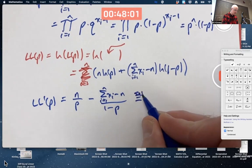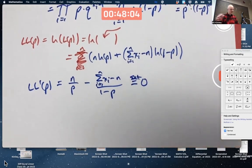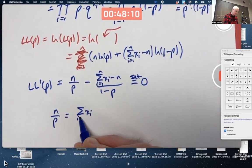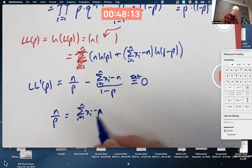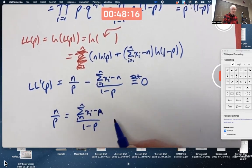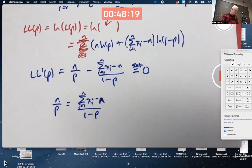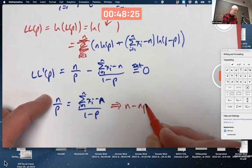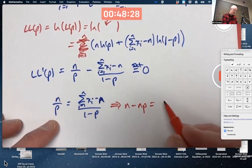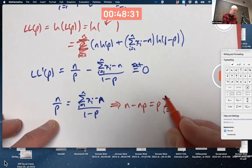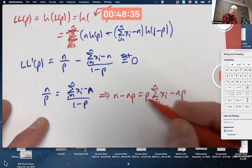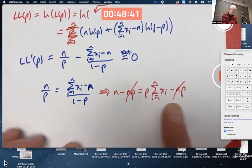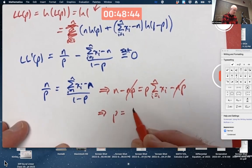And do what you did in calculus, set this equal to 0, and solve for P. Maybe rearrange to have the equality between two fractions. You could take reciprocals of both sides. You could also cross-multiply. Let's cross-multiply. N times 1 minus P is n minus nP. P times this thing is P times the summation. N minus nP. Oh, some nice things happen. N minus nP cancel.